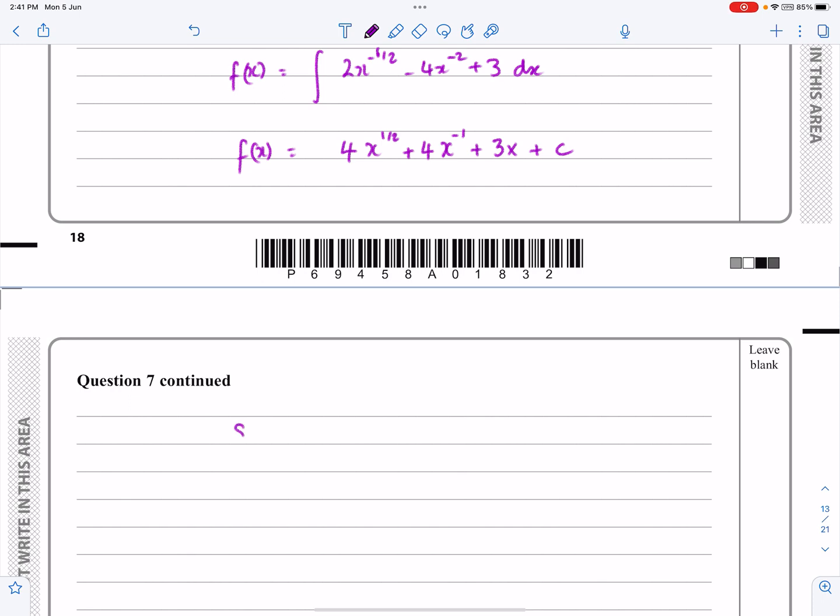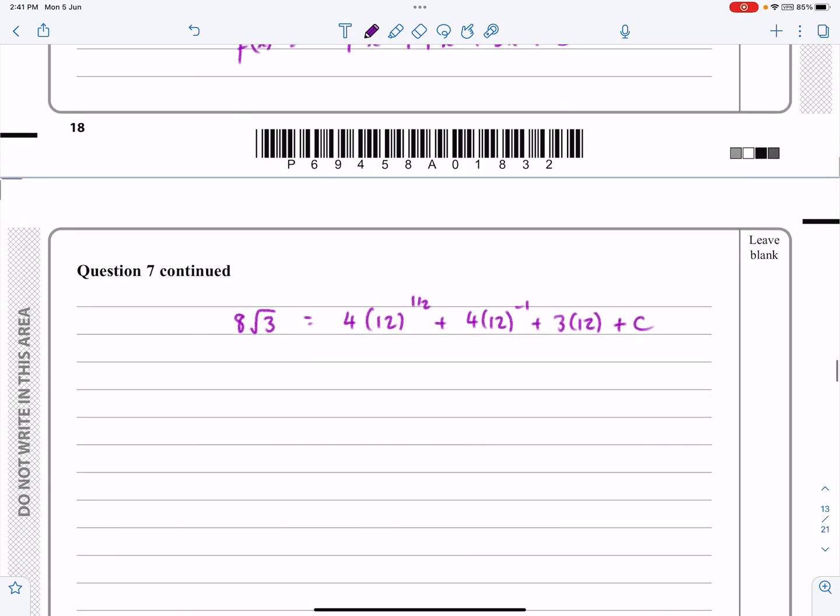So f(x) is equal to 8√3 when I put 12 into my function. So 12 in there, 12 in there, 12 in there, and then c is what I'm going to need to work out.